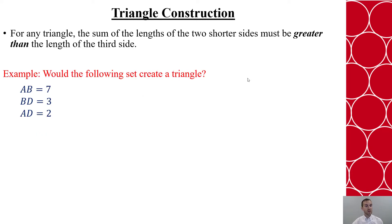Now, what if I had that AB was 7, BD was 3, and AD was 2? Now I'm going to take my two shorter sides, in this case it's the second two, and say 2 plus 3, and compare that to 7. Well, 5 is actually less than 7, not greater. So this would not construct a triangle. And if you tried, and you move the pieces, you'd see that they do not align.